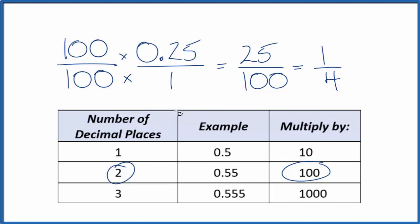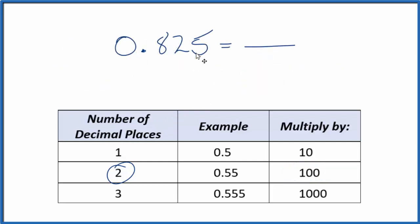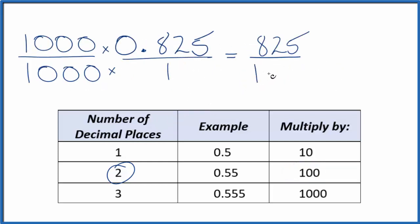Let's wrap up with 3 decimal places. So here we had 1, 2, 3 decimal places. 3 decimal places, we multiply by 1,000. We end up with 825 over 1,000, and we could reduce that to 33 over 40. Pause and give it a try.